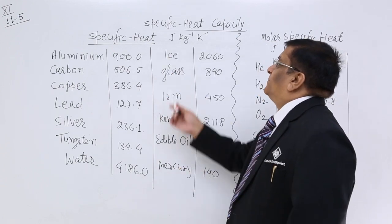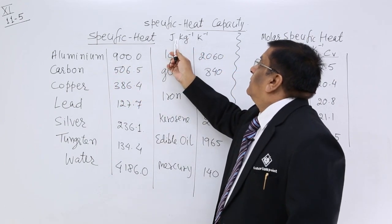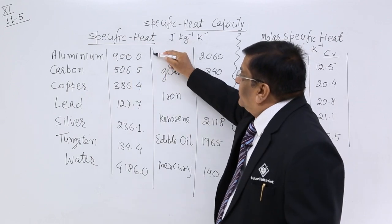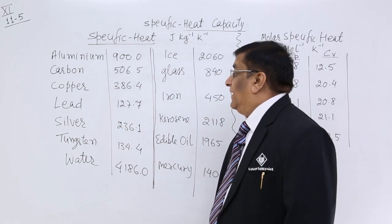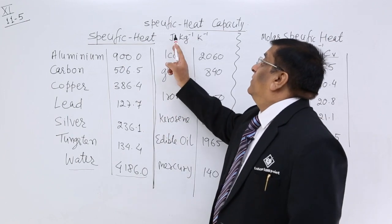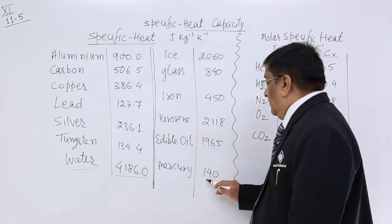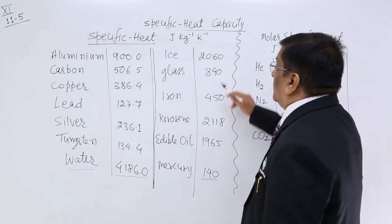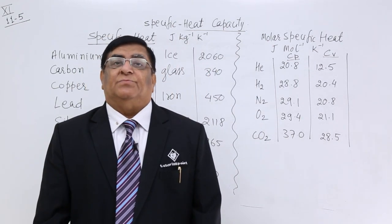Here is the chart of specific heat in Joule per kg per Kelvin. Aluminium takes 900 Joule for 1 kg to rise its temperature by 1 Celsius. Carbon takes only 506. Lead takes only 127. Water takes 4186 Joule per kg per degree. Mercury takes only 140 Joule. According to these specifications, we use these materials for different purposes.